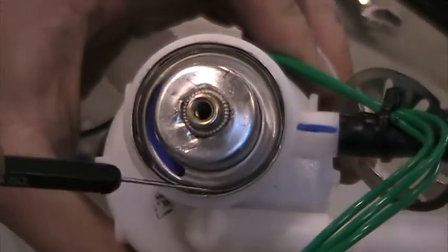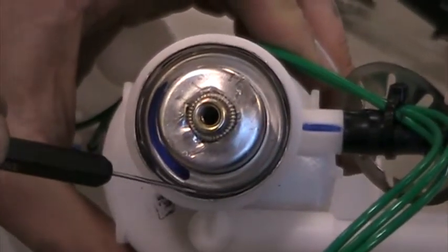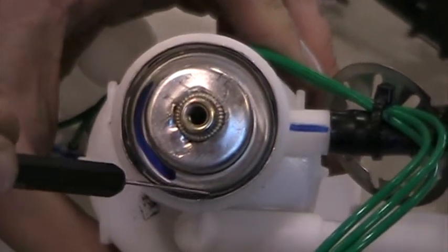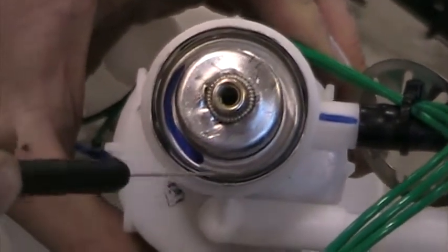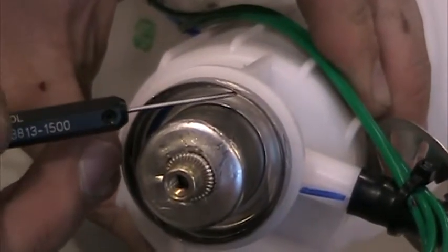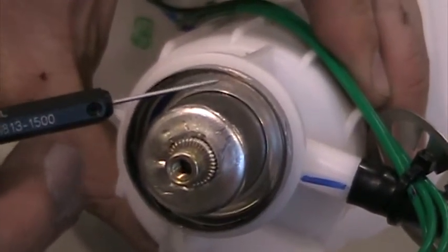But on this side you can actually see if you run a pick or a screwdriver by it, you can see that the edge is actually on the outside of that dimple. Whereas on the opposite side, I can run that screwdriver in or pick and it actually slides in pretty smoothly over the edge.